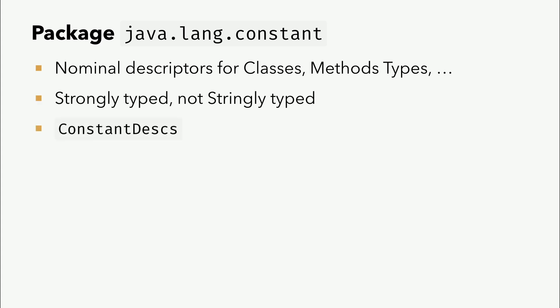In dem Paket sind nominale Beschreibungen für Klassen, Methodentypen, Signaturen, Konstanten und alles Mögliche. Das Beste ist, es gibt jede Menge schon zum Benutzen. In der Klasse ConstantDescs gibt es jede Menge Statics für Primitive-Types, Box-Types, Throwable. Wir haben Konstanten für Null, True und False, 15 weitere für MethodHandles. Und ich bin mir sicher, dass das OpenJDK-Team mehr hinzufügen wird, wenn es merkt, dass das einfach Dinge sind, die man einfach mehr benutzt. Weil es ergibt wenig Sinn, dass jeder von uns Int, Void, System und so weiter immer selber als Konstante festlegt, wenn eigentlich die API überall benutzt wird.